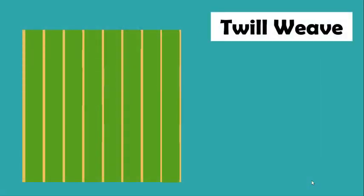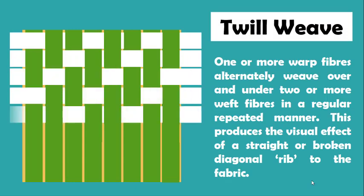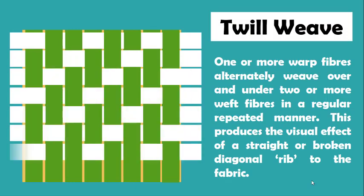Next is twill weave. Here, one or more warp fibers alternately weave over and under two or more weft fibers in a regular repeated manner. This produces the visual effect of a straight or broken diagonal weave to the fabric. Twill has closer setting of yarns due to less interlacements, imparting greater weight and good drape as compared to a plain weave.